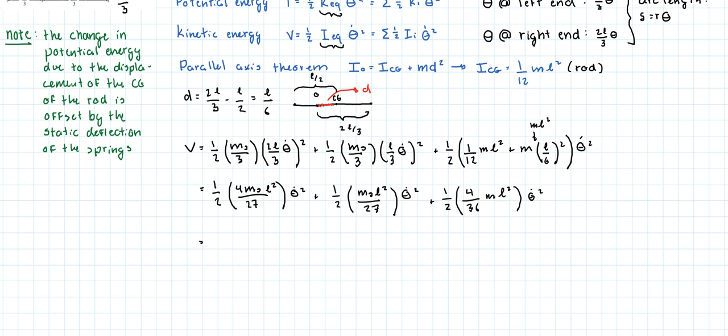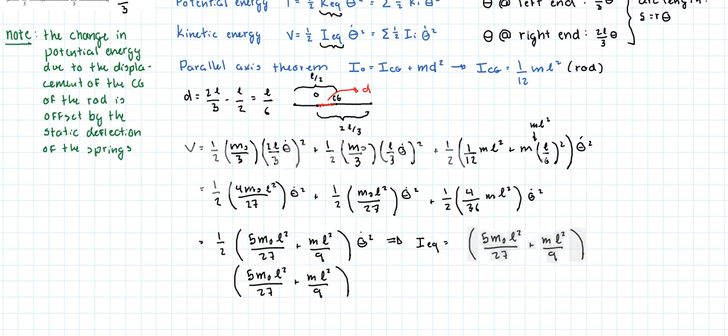Let's bring all of these together. 1 over 2 times 5 times the mass of the spring times length squared over 27, plus mass times length squared over 9, because we divide it by 4, and all of that times the velocity squared. Therefore, the equivalent inertia is equal to this guy over here. That's the first part of our answer.